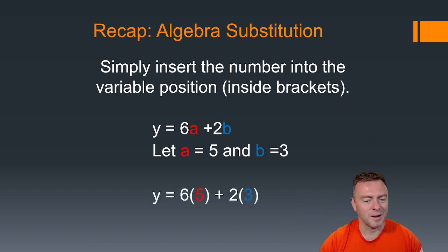We do this by wrapping around in brackets, and then we just solve as normal. So we'll do 6 times 5, which gives us 30, and then 2 times 3, which gives us 6, and then add that together to get 36.